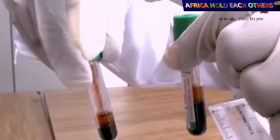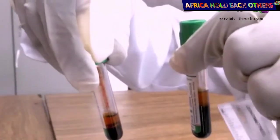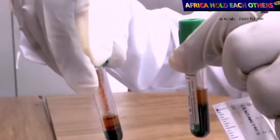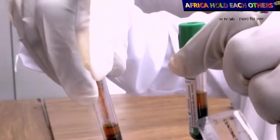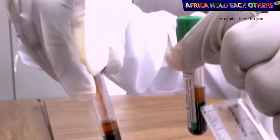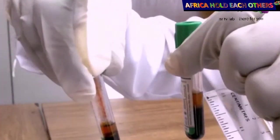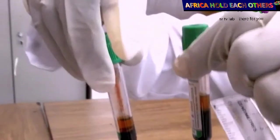We have two tubes here. The first one, you see, the down part is very dense. That is concentrated red blood cells. In the upper part is brownish. That is plasma.